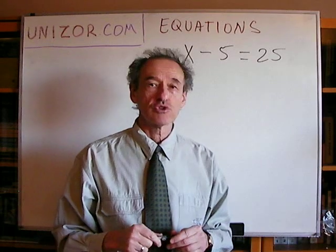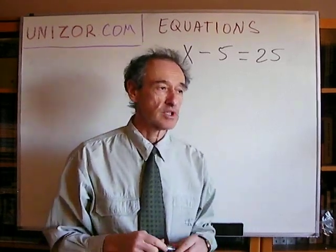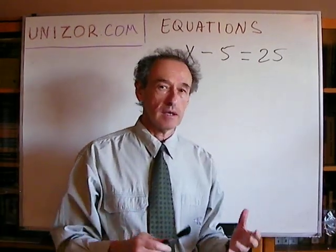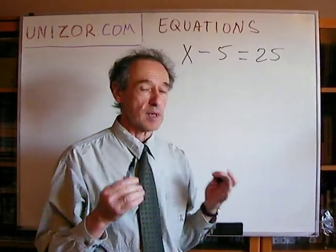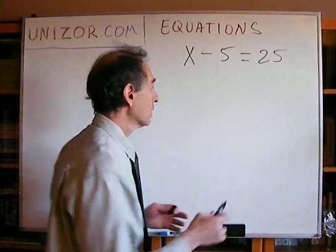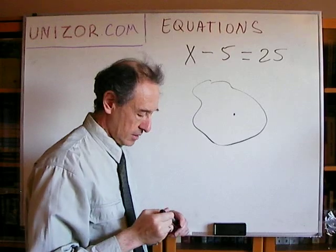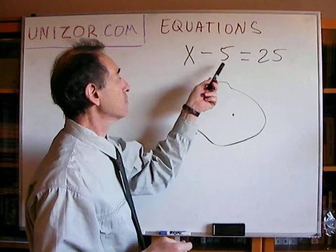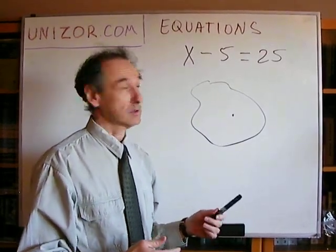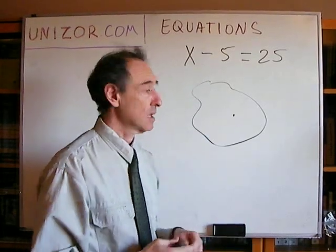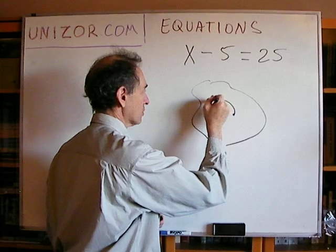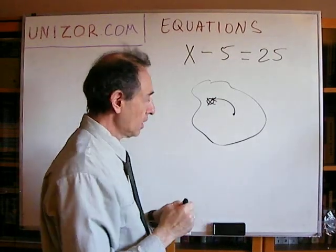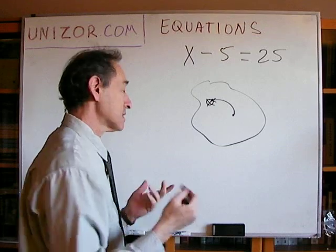Let me go back to a previous lecture where we were talking about operations, especially in this particular case, unary operations. Basically, what we can say is that there is some set from which we are looking for a certain element. Now, what do we know about this element? This is an unknown element, and we know that if we have performed a certain operation on this element — which is subtracting 5 in this particular case — we will get another element, 25 in this case, which we do know.